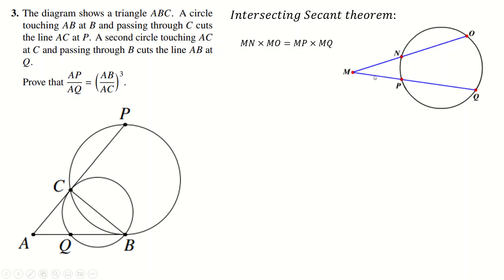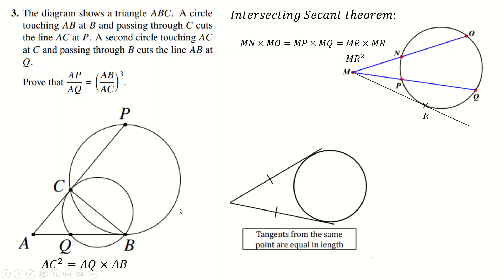If one secant is actually a tangent with only one intersection, the theorem still works — you just use that single distance mr twice, giving mr squared. This is because as the line approaches being a tangent, mp and mq converge to the same value. Interestingly, this theorem is actually a generalization of the GCSE circle theorem that two tangents from the same external point are equal length — that's just the special case where both secants are tangents, giving mn = mp, which is the GCSE result.